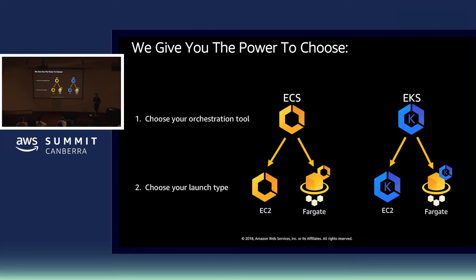AWS has been innovating in this space for a long time on behalf of our builders and our customers, to try and address some of these challenges with regards to container orchestration. It started in 2014 with the introduction of Amazon ECS, or Elastic Container Service. This is a highly scalable, fully managed, secure, and deeply integrated container orchestration service. Those of you that have been paying attention to our releases will know that at re:Invent last year, our global conference,